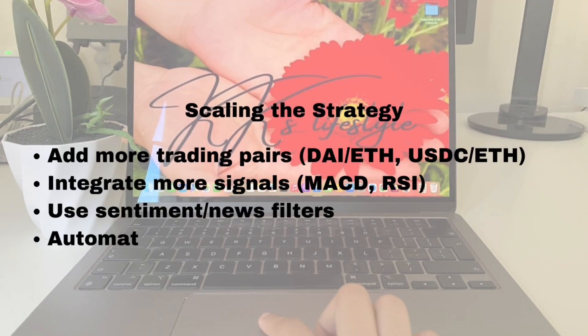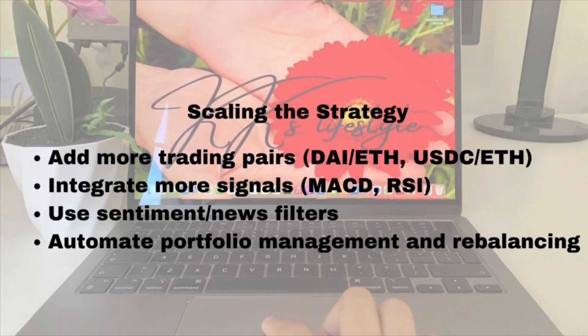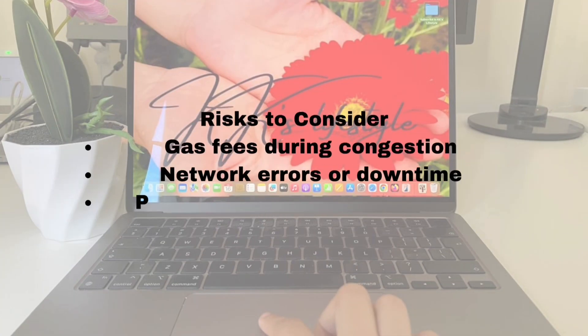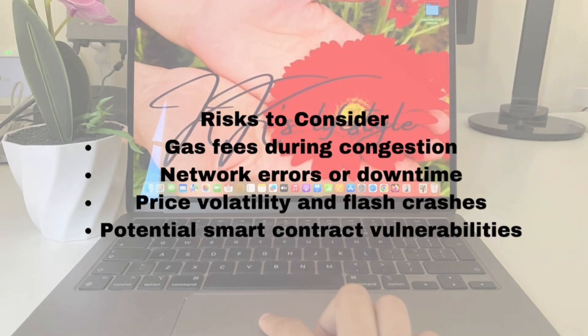Once you're more confident with the bot, you can start scaling. Try adding more trading pairs, include more indicators like MACD or RSI, and even build in news or sentiment filters to make smarter decisions. Eventually, you can automate portfolio management and rebalancing, making your system more advanced. That said, there are always risks: gas fees can spike during network congestion, there's a chance of network errors or service downtime, crypto is volatile with flash crashes or sudden price swings, and some smart contracts could have bugs or security vulnerabilities. So always do your research.